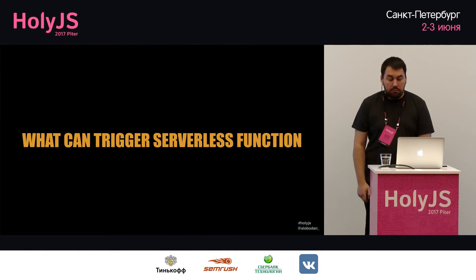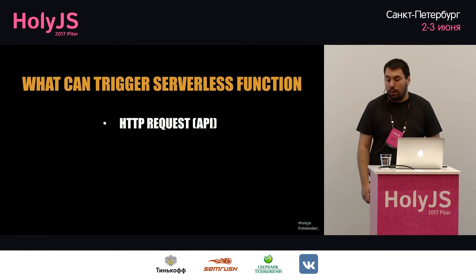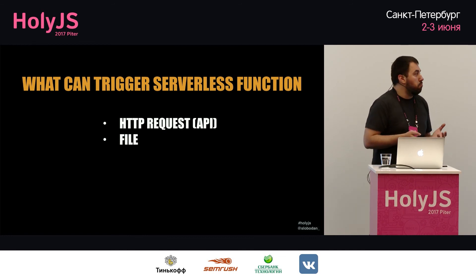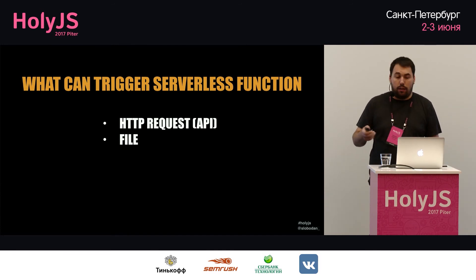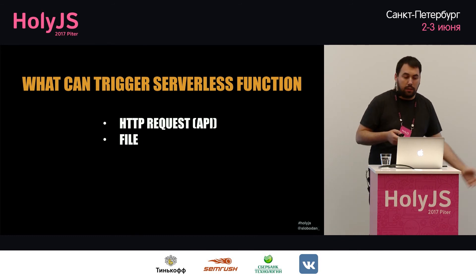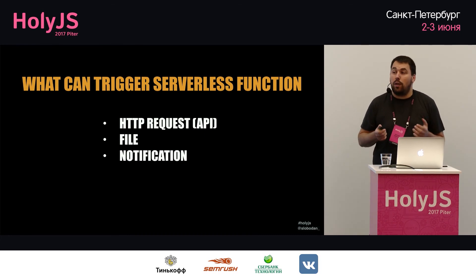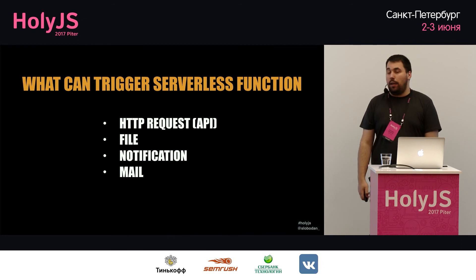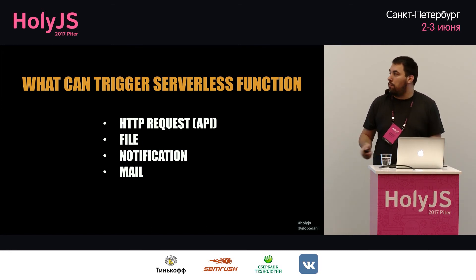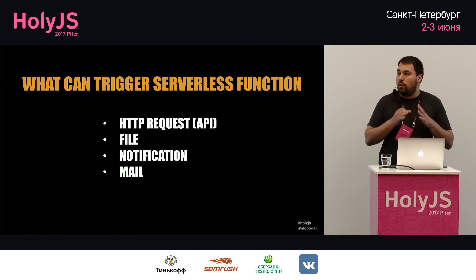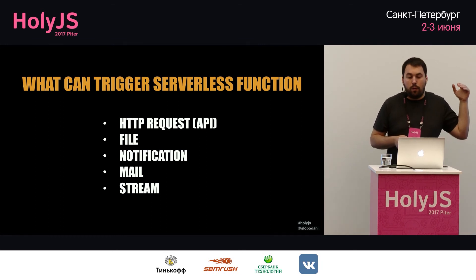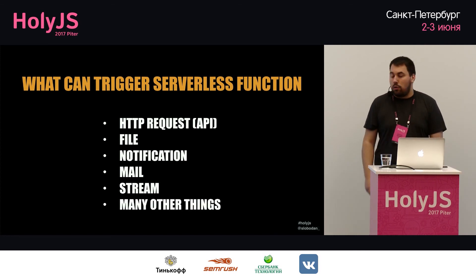Lambda functions can be triggered by several things: an API via simple HTTP requests; file uploads to S3 which can trigger processing; notifications to trigger a Lambda and process something; emails — imagine building a customer support service where incoming emails automatically open a Jira issue; data streams where you transform data with Lambda and put it back in the stream; and many other event sources.